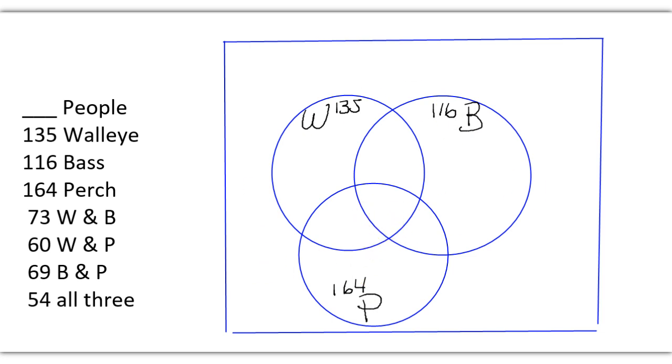So what is our strategy? We start with all three. The number that caught all three was 54. Now we're going to look at those that caught W and B. W and B were 73, and I'm going to subtract 54 from them. Subtract 54 from 73, that leaves me with 19.